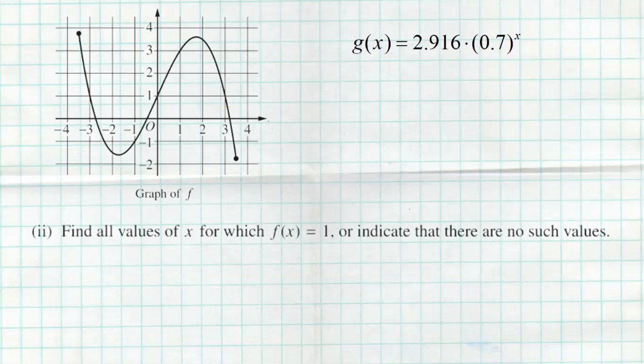Part two of section A says, find all values of x for which f of x equals 1 or indicate that there are no such values. We're going to look at the graph of f and we're going to look at 1. We actually see that there are three points in the domain where we equal 1. If I draw a red line here, we can clearly see those three points. We were also told these three points are at x equals negative 3, x equals 0, and x equals positive 3. At all three of those locations, we have an output value of 1 for function f.